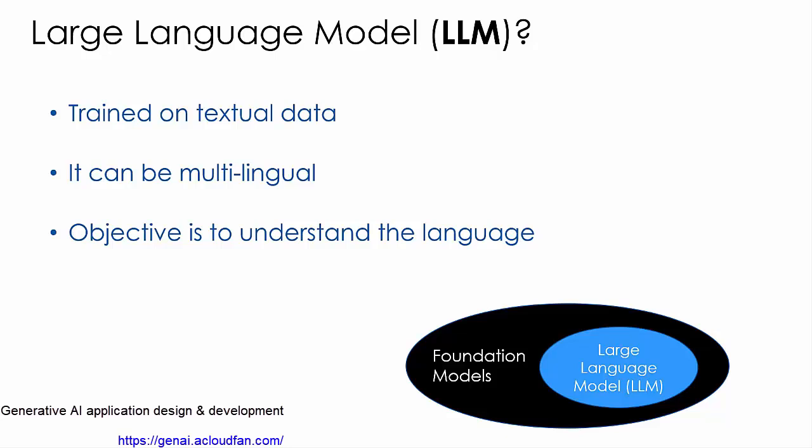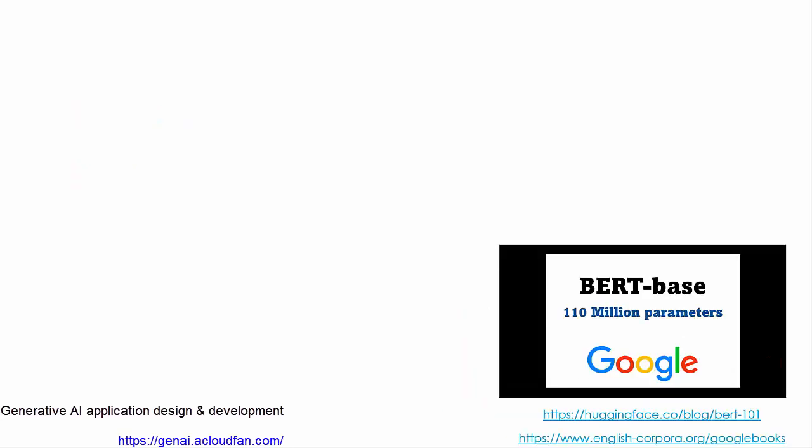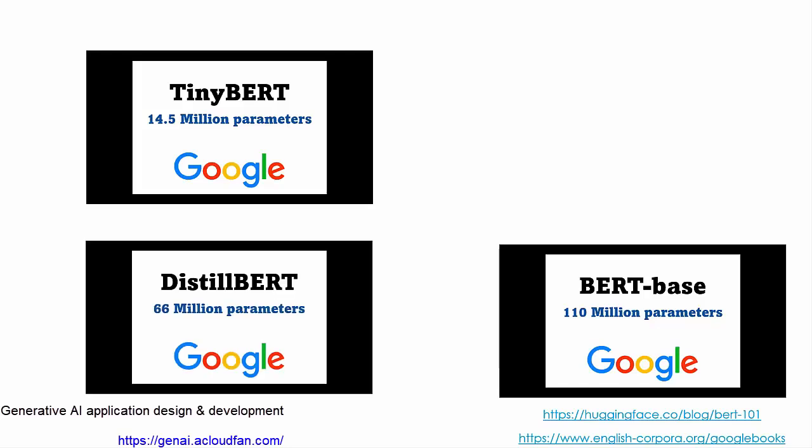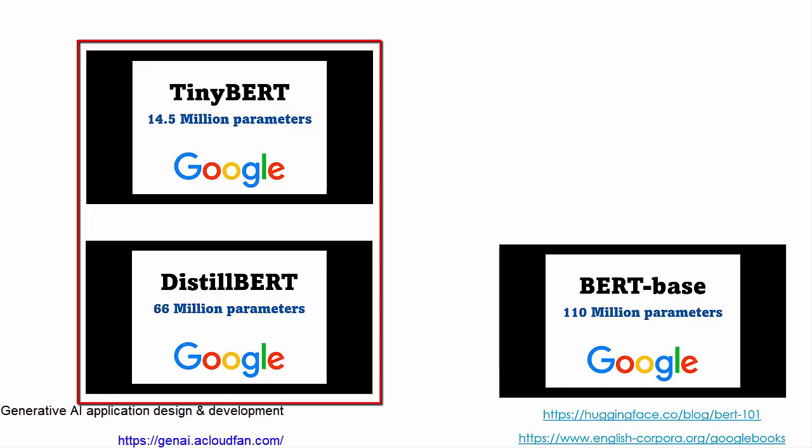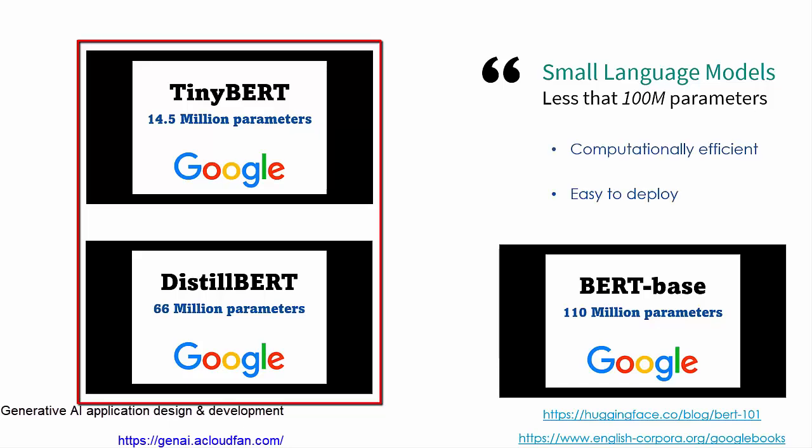Models with common architecture are said to belong to the same family. For example, tiny bird and distilled bird have the same architecture as bird base. The difference is in the number of parameters. Tiny bird has 14.5 million parameters and distilled bird has 66 million parameters. Both are relatively smaller than the bird base model that has 110 million parameters. These models fall in the category of small language models, which are models with less than 100 million parameters. These models are computationally very efficient and they are easy to deploy. As a result, they are a good candidate for use in edge devices like mobile phone, consumer devices such as TVs and even coffee makers.